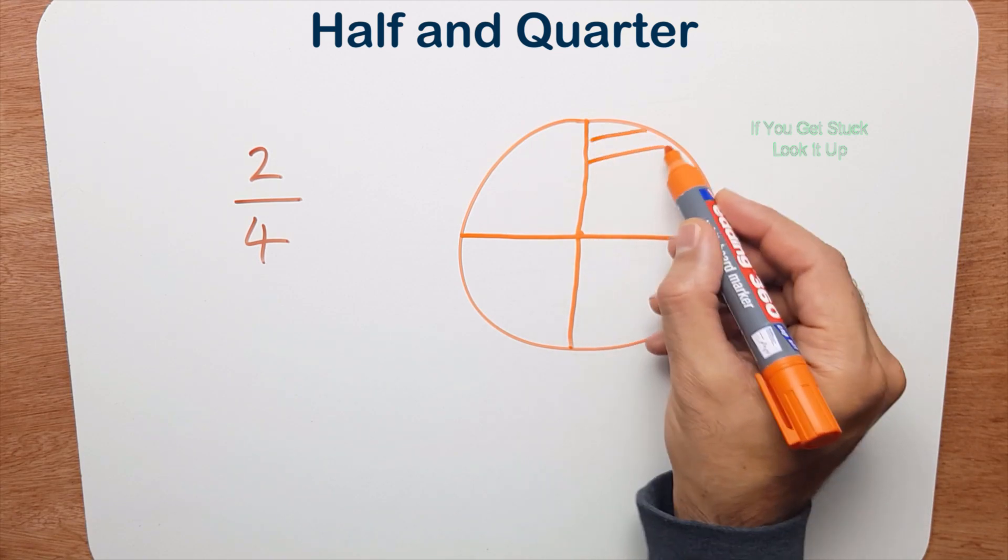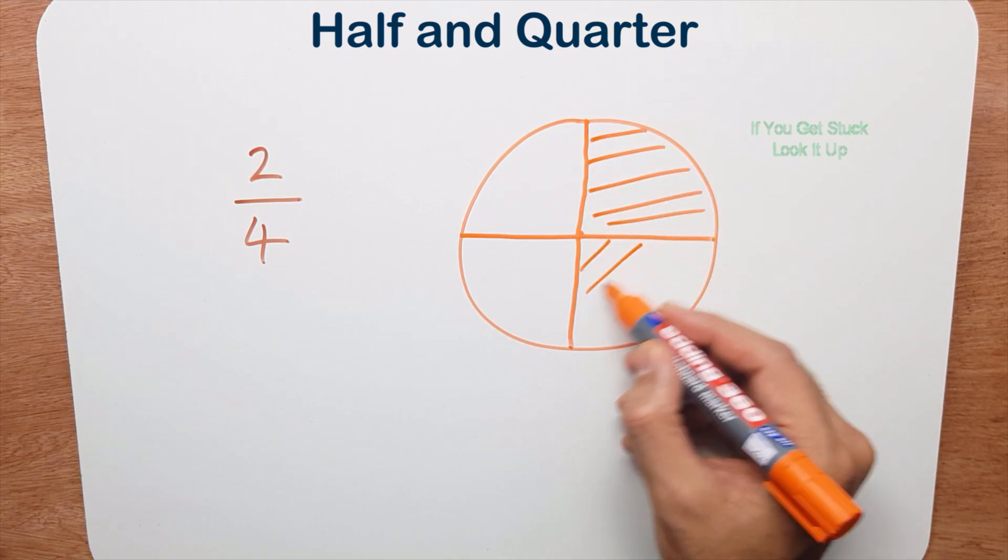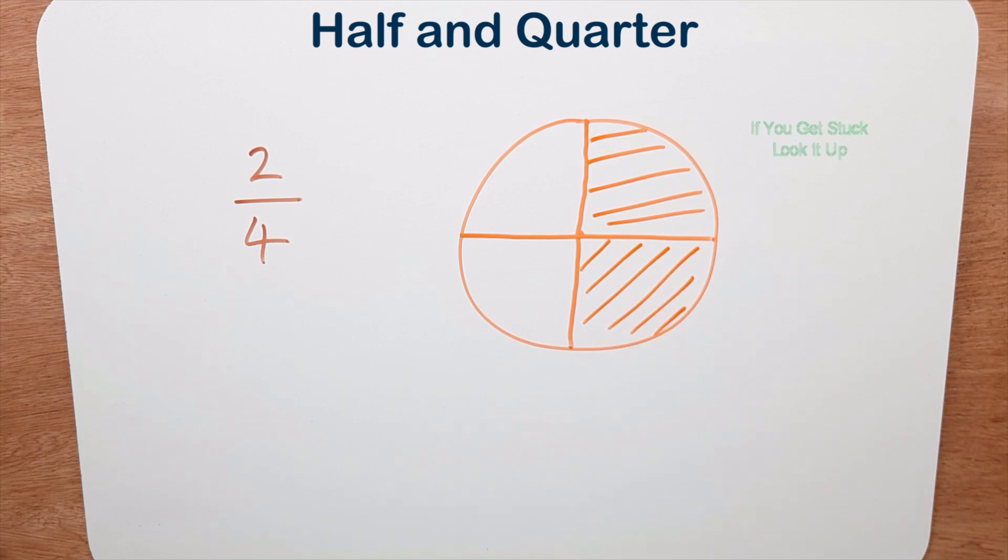So if I did that, one, two. And if you look carefully, I've shaded half the pizza or I've eaten half the pizza.